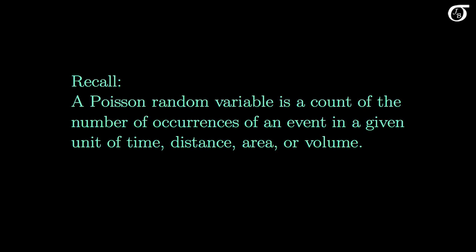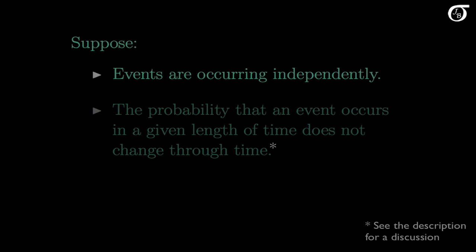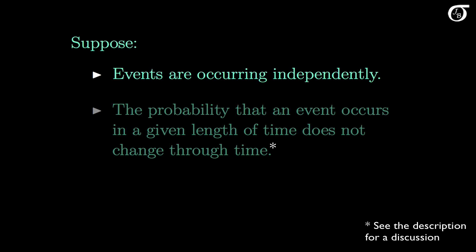Recall that a Poisson random variable is a count of the number of occurrences of an event in a given unit of time, distance, area, or volume. I'm going to phrase the following in terms of time, but the same ideas hold if we are discussing distance, area, or volume.